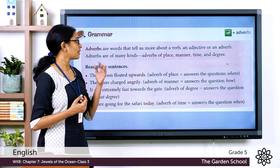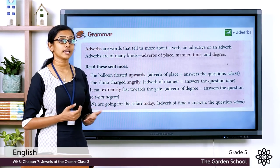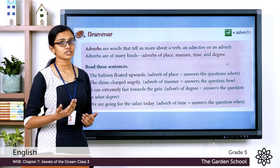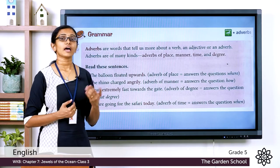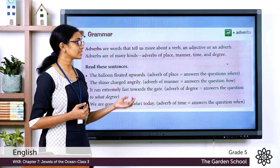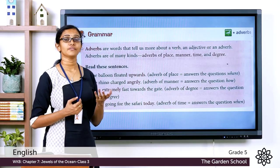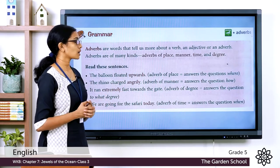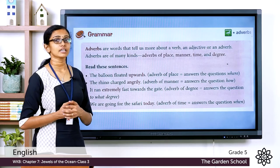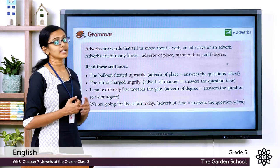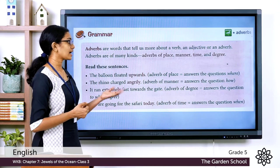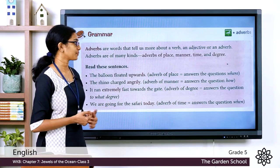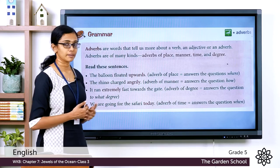Adverbs of place tell us where the verb or where the action is taking place — they answer the question 'where'. Adverbs of manner tell us the manner in which the action is done and they answer the question 'how' — how the action or how the verb is done.